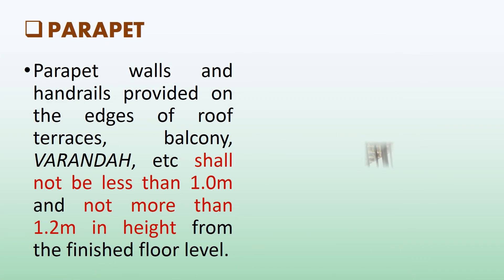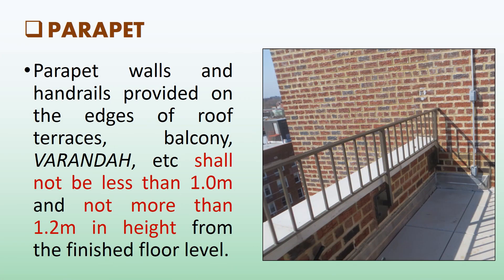We will now see requirements of parapet. Parapet walls and handrails provided on the edges of roof terraces, balcony, veranda, etc. shall not be less than 1.0 meter and not more than 1.2 meters in height from the finished floor level.